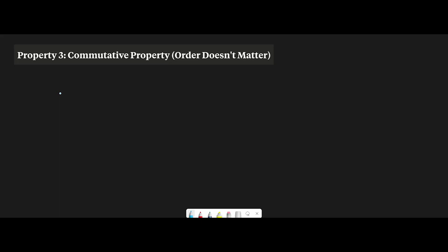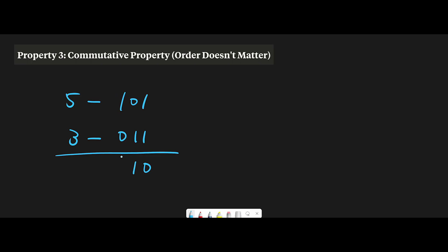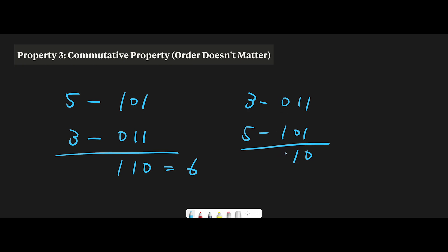Property number three: commutative property — order doesn't matter. Exclusive OR is commutative, meaning order doesn't matter. For example, 5 (1,0,1) XOR 3 (0,1,1): 1 XOR 1 = 0, 0 XOR 1 = 1, 1 XOR 0 = 1 — result is 6. Swapping positions: 3 (0,1,1) XOR 5 (1,0,1): 1 XOR 1 = 0, 1 XOR 0 = 1, 0 XOR 1 = 1 — result is also 6. The results are the same.